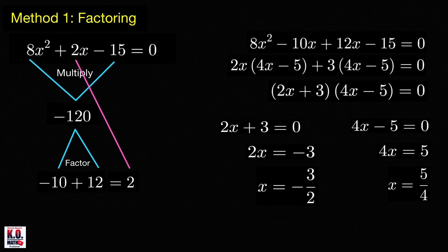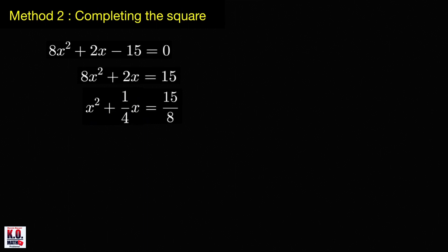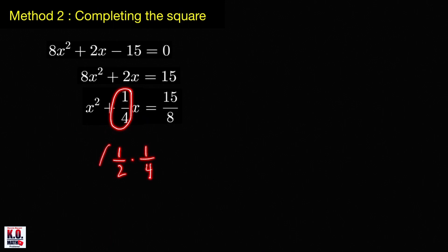Let's move to the second method and solve this equation by completing the square. The first step is to isolate the constant term — move negative 15 to the right-hand side so it becomes positive 15. Then divide both sides by 8, giving x² plus (1/4)x equals 15/8. To make the left-hand side a perfect square trinomial, we divide the coefficient of x by 2: that's 1/4 times 1/2, then squared, giving (1/8)² which equals 1/64.